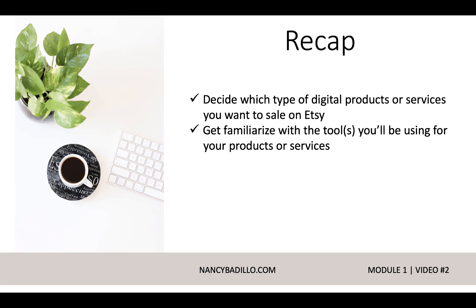Now let's do a recap of module one. On a piece of notebook paper that you'll be using throughout the whole course, decide which type of digital products or services you want to sell on EXI. Do you want to start a digital planner store, a sticker store, a party store? Once you decide, get familiarized with the tools you'll be using. If you're going to sell stickers, what tools do you need? If you're doing wedding items, what tools do you need to create wedding invites and signs? Start doing that now — in every module you'll have a recap and an action tip to help you lay out the foundation of your EXI store.